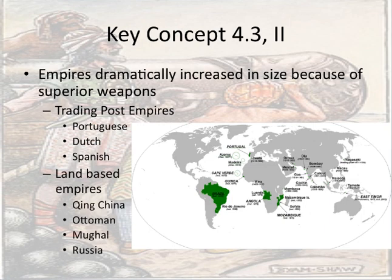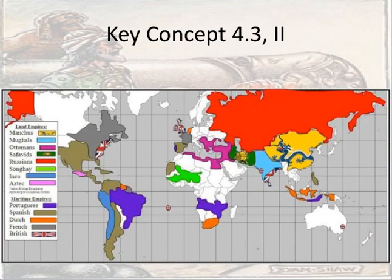Land-based empires that grew tremendously during this time would have been the Qing in China, the Ottomans, the Mughals, and Russia. These were empires that didn't rely heavily on trading posts — they didn't seek to expand into different geographic areas of the world but sought to expand their already emerging empires. Here's a nice map swiped from Freemanpedia, a great resource for AP World History help, that shows towards the later part of this period just how big those empires were. Of course, the Aztec and Inca empires are going to be overtaken by the Spanish after their conquests.